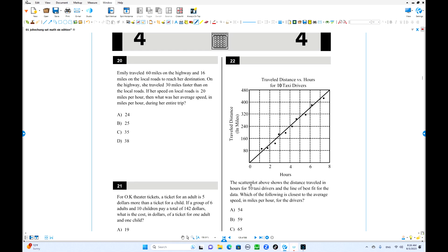Number 20, Emery traveled 60 miles on the highway, 60 miles local. On the highway, 30 miles faster than local. Local speed is given, 20 miles per hour. The highway 30 miles faster means 50 miles per hour. The distance local is 16 miles, highway is 60 miles. We are going to find out average speed during the entire trip. What is the definition of average speed? Average speed is your total distance over total time.